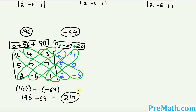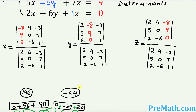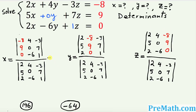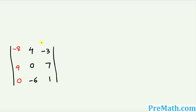So the value of the bottom determinant is 210. I'm going to write down 210 on the bottom for all three fractions — x, y, and z — since all three bottom determinants are the same. Now the next step is to take care of the top determinant, starting with the top determinant for x.